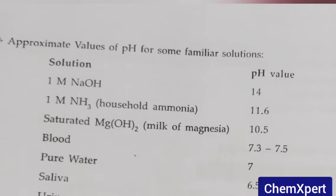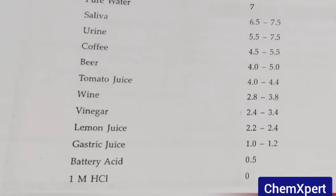Next, mention the pH value of the following solutions. NaOH has the highest, 14. NH3 is 11.6. Milk of magnesia, which also acts as an antacid, has 10.5. Blood is 7.3 to 7.5. Pure water is 7. Saliva is 6.5 to 7.5. Urine is 5.5 to 7.5. Coffee is 4.5 to 5.5. Beer is 4 to 5. Tomato juice is 4 to 4.4.